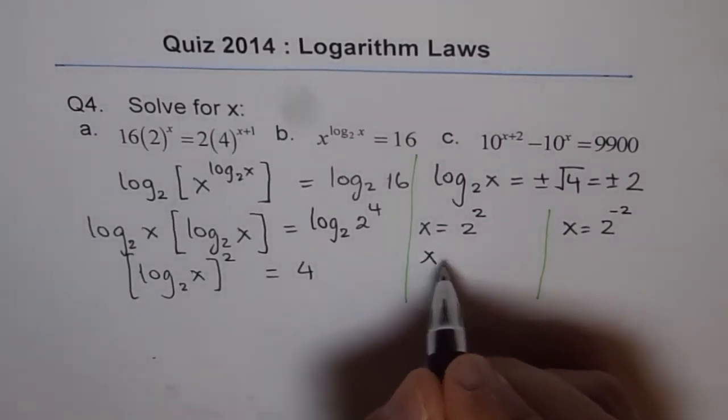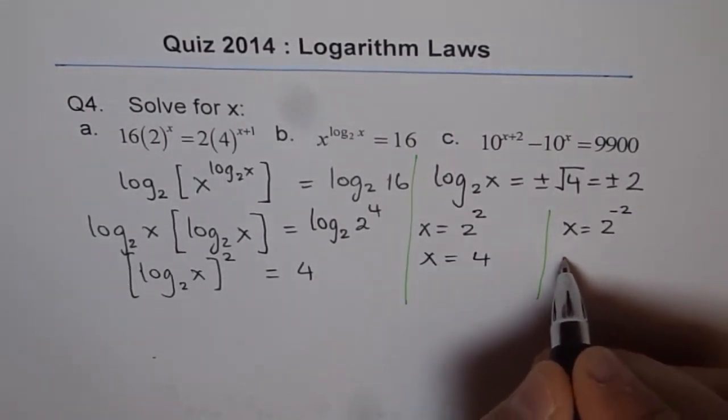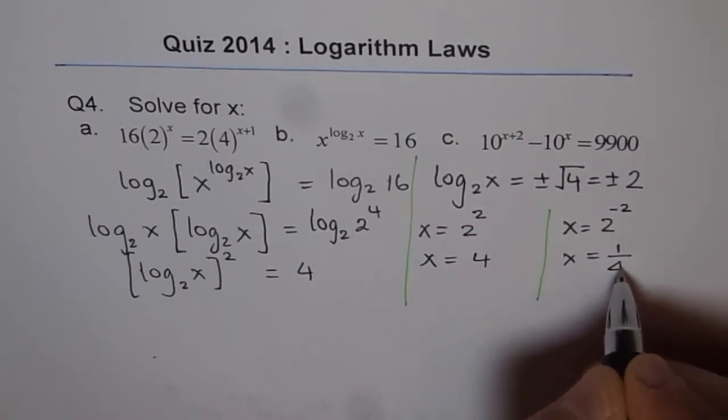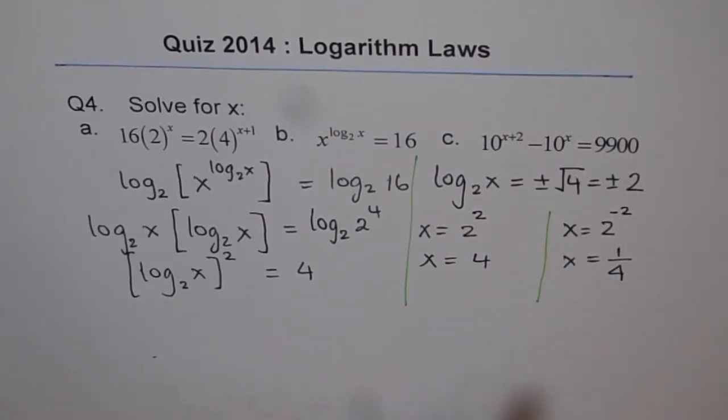So this is x equals to 4 and the next solution is x equals to 1 over 4. So these are the two solutions for 4B.